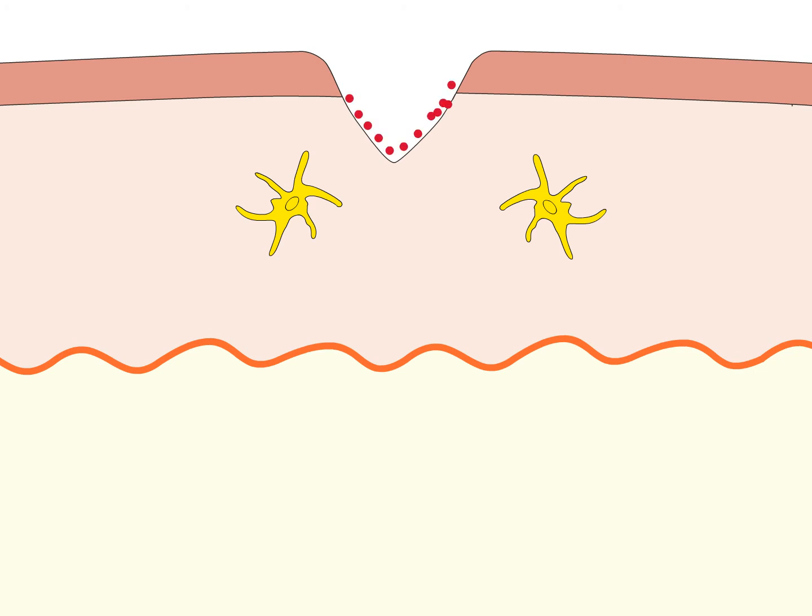Dendritic cells express various pattern recognition receptors that can recognize common features of many bacterial and fungal pathogens. Through these receptors, they are able to bind to and phagocytose pathogens.